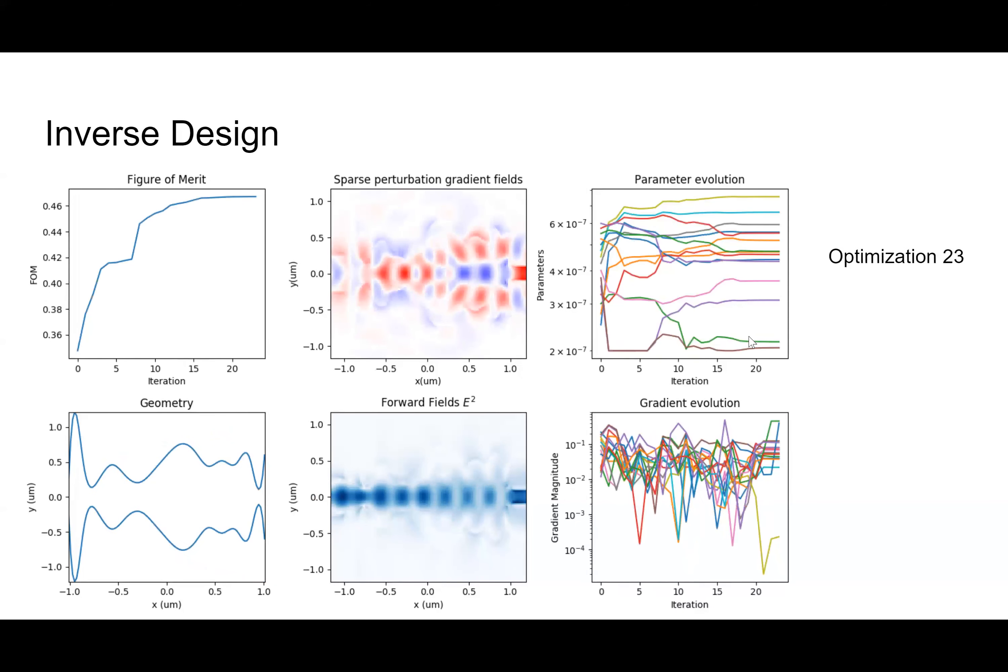And then here is the final optimization, optimization 23. Again, our shape is now different and is still non-intuitive. And here the figure of merit increased until it leveled off. And that is what triggered the optimization program to stop once the figure of merit stops changing between different iterations or the change drops below a certain threshold.